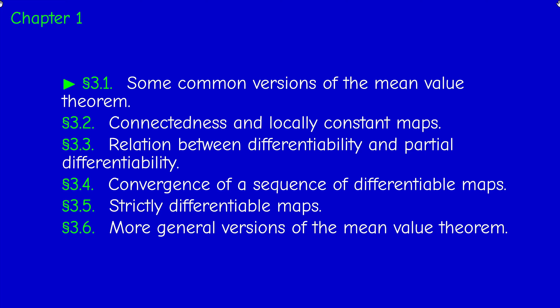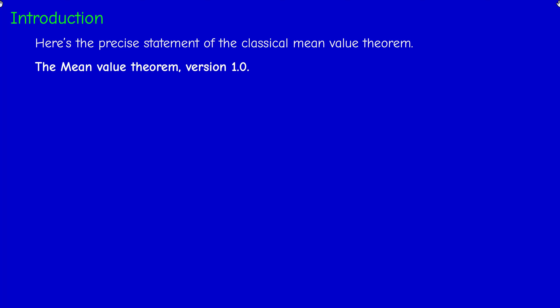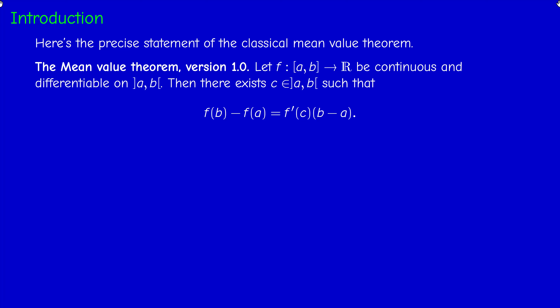Let us recall first the classical version of the Mean Value Theorem — the calculus version you studied in first year. I will call it Version 1.0. It states: if you have a function from a closed interval [a, b] into ℝ which is continuous on the closed interval but differentiable on the interior (the open interval), then there exists a number c strictly between a and b such that f(b) − f(a) = f′(c) · (b − a). Note that we don't require the existence of left and right derivatives at a and b; we only need differentiability inside.